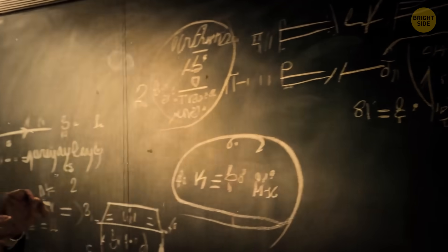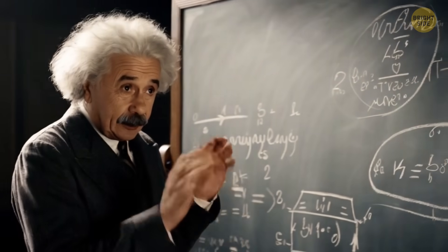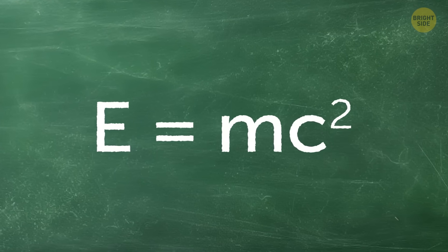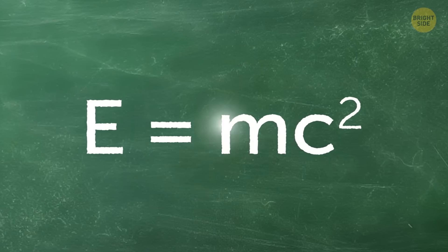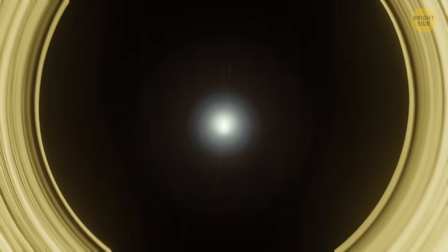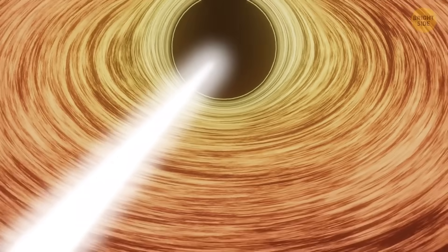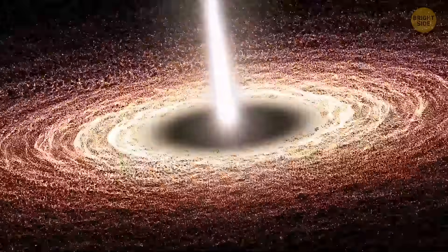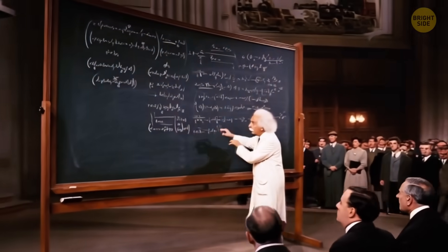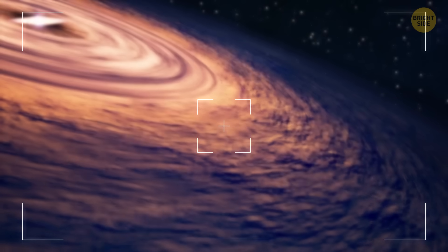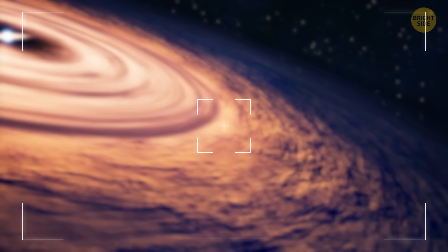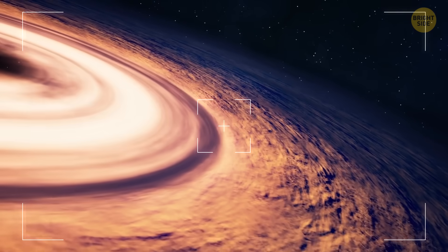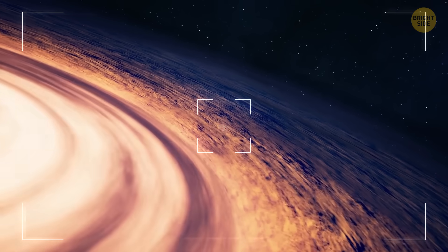When Einstein published his groundbreaking theory of general relativity, another scientist, Carl Schwarzschild, took his equations and found a solution to them. And that's when he realized, if gravity becomes incredibly strong, the light wouldn't be able to escape. And this could create a sort of hole in space. Einstein even thought that this sounds too weird to be true. It took many years for us to confirm black holes' existence. And we finally took a photo of one just a couple of years ago.